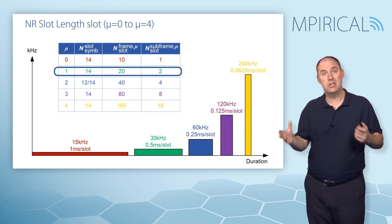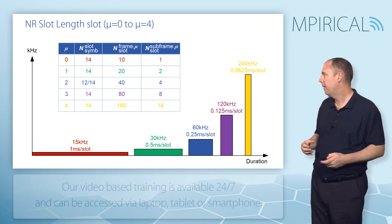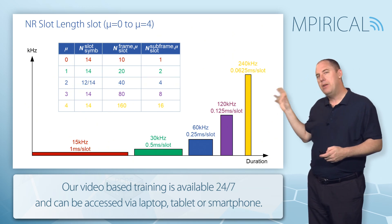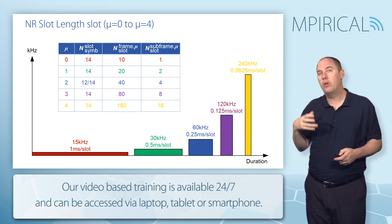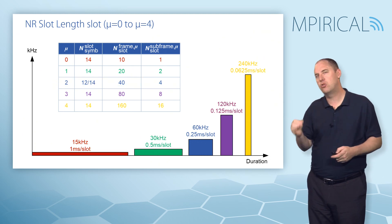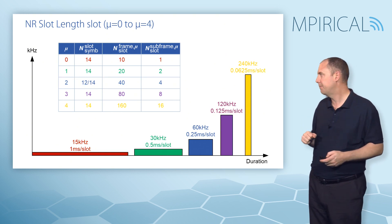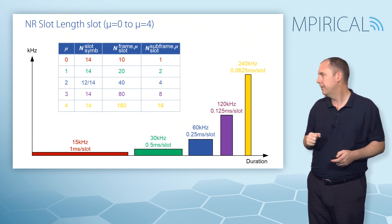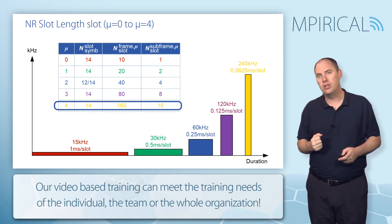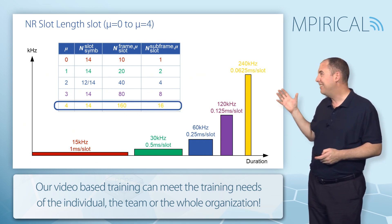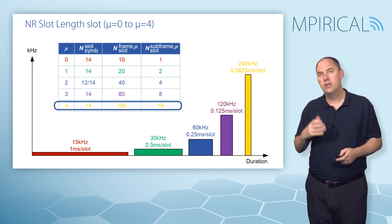So you've doubled the number of slots, giving you twice as many symbols in the time domain. But remember, you've also doubled the frequency domain from 15 to 30 kilohertz, so you're not gaining in terms of number of symbols — you're just changing the way those symbols look. At numerology 2, there's a choice: again a doubling of slots, but the number of symbols per slot is either 12 or 14, depending on whether it's a normal or extended cyclic prefix — normal gives 14, extended gives 12. Then doubling again to numerology 4 gives 160 slots in the frame, with each subframe carrying 16 slots.